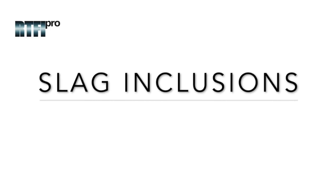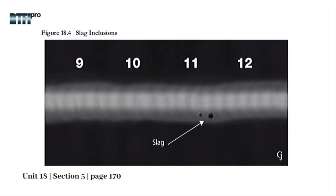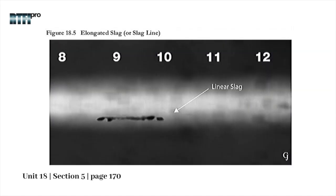Slag inclusions are often more irregular than the circular porosity and can be in many different shapes and sizes. Slag inclusions are often linear and elongated with the length of the weld and frequently seen in multi-pass welds where cleaning between passes has not been adequately performed.